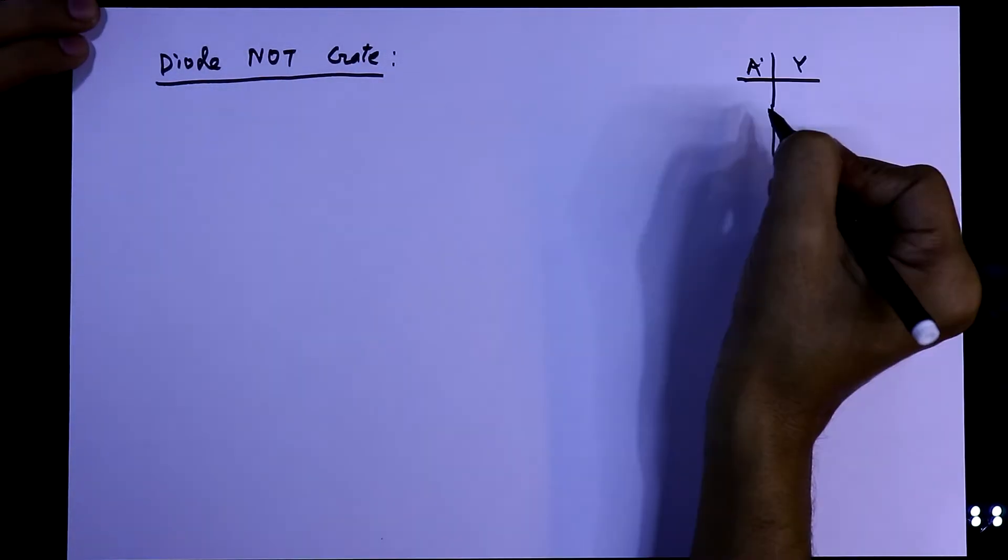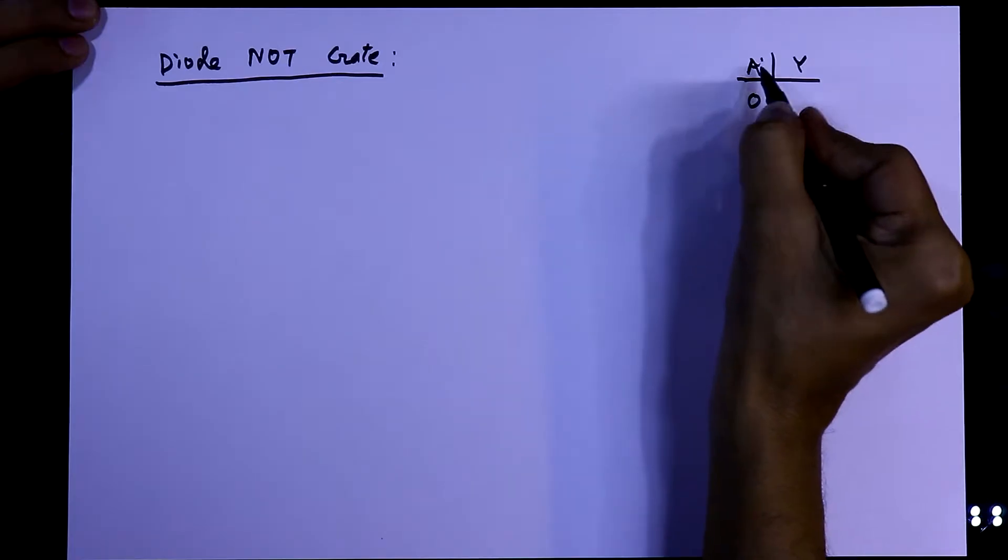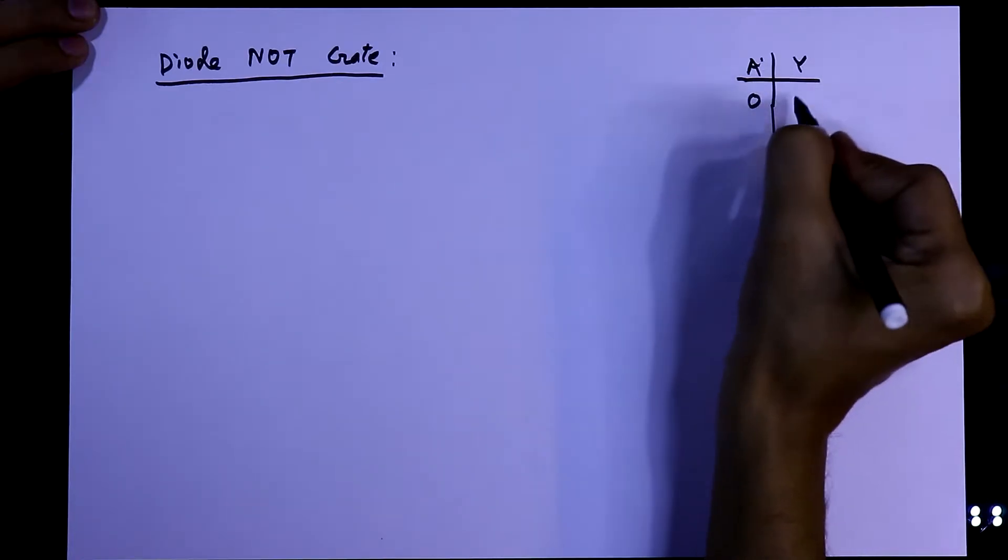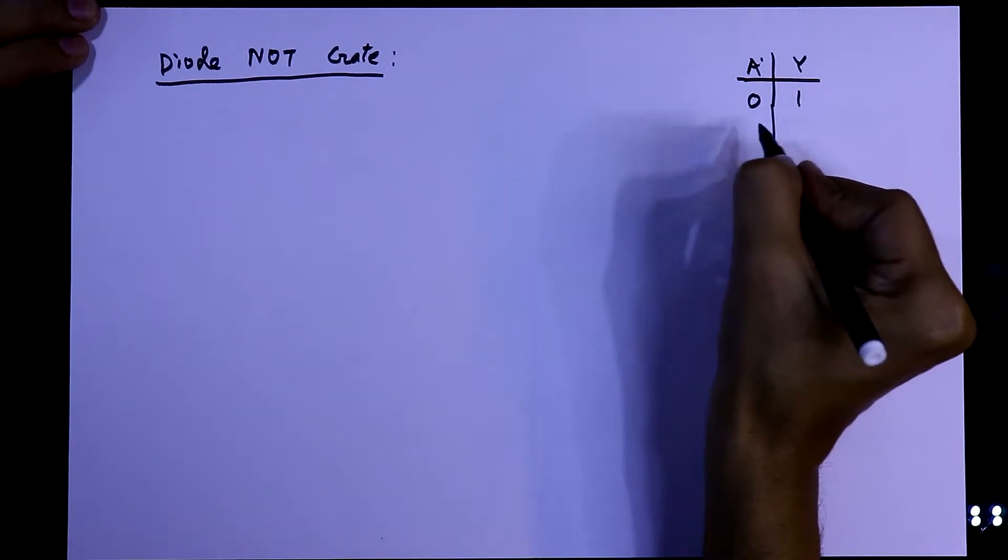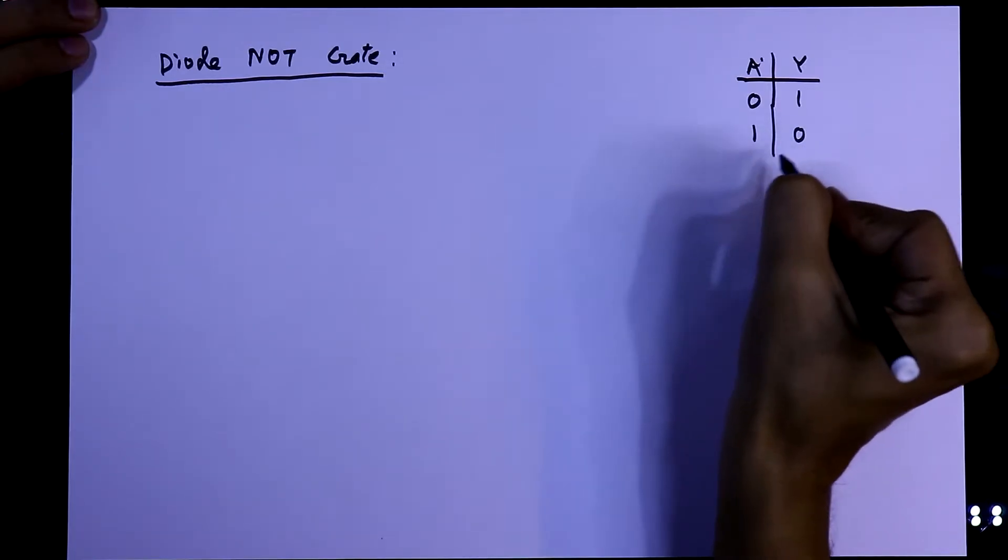Diode NOT gate. Truth table of NOT gate: when A is zero, that is input is zero, output will be one. Input is one means output will be zero.